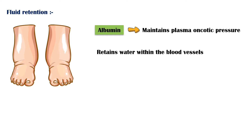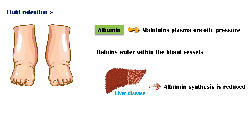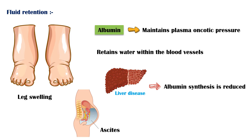However, in liver disease, the synthesis of albumin is reduced. This leads to extravasation of water from capillaries into the interstitial space, causing signs such as leg swelling and ascites.